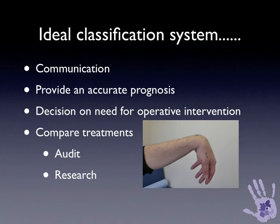A classification system allows accurate communication between clinicians. It also allows us to define the discrete nature of a nerve injury and therefore provide an accurate prognosis for patients, and along with it to make a decision about whether operative intervention is required. An ideal classification system is accurate with very little inter-observer and intra-observer variability, allowing direct comparison of treatments for the purposes of audit and research.